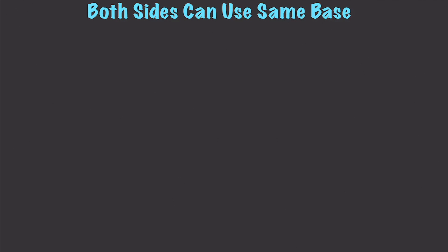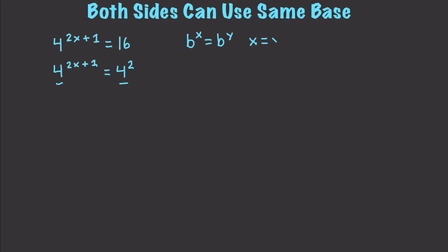We can use this to solve rather complicated-looking problems really easily. I'm going to solve an exponential equation in which both sides can use the same base. So let's say you have 4 to the power of 2x plus 1 is equal to 16. What we're going to do is note that 16 translates into 4 to the power of 2. Since the bases are the same and we know the rule that if b^x equals b^y, then x must equal y.